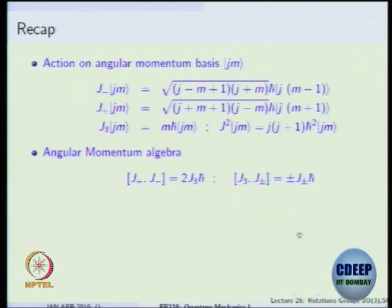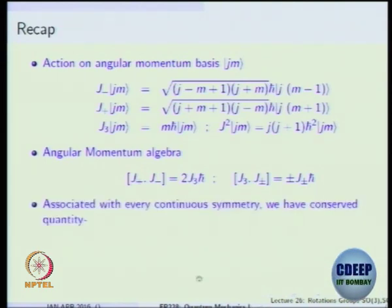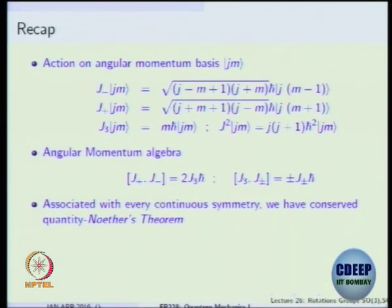Whenever you have a continuous symmetry like translations, space translation, time translation, or rotation, we have a conserved quantity. This comes under the heading of Noether's theorem in classical mechanics, which also goes through for quantum mechanics — on the matrix elements or expectation values, or in the Heisenberg picture on the time evolution of the operator. I am just trying to connect with what you know so far. Let me put it as a table.